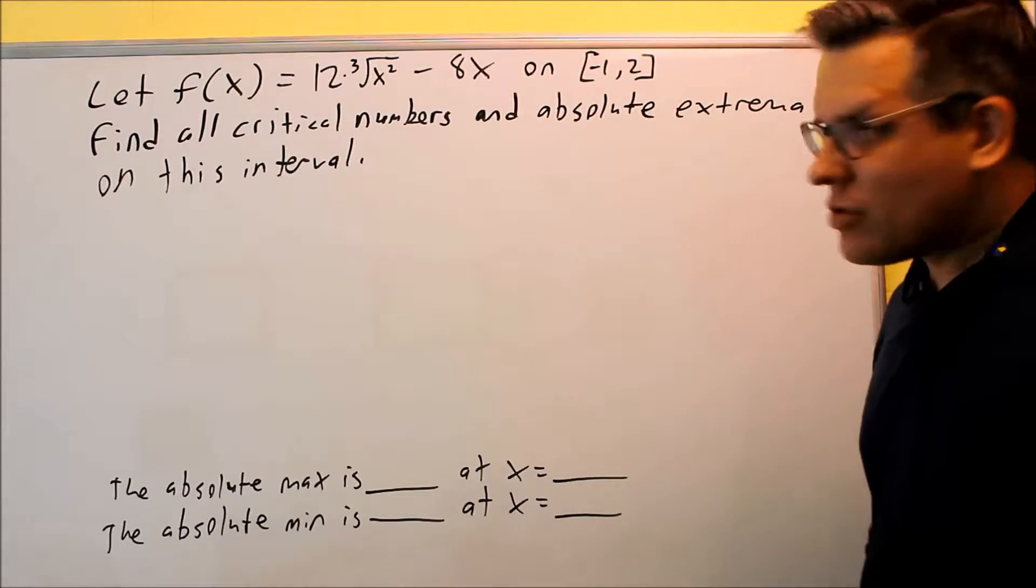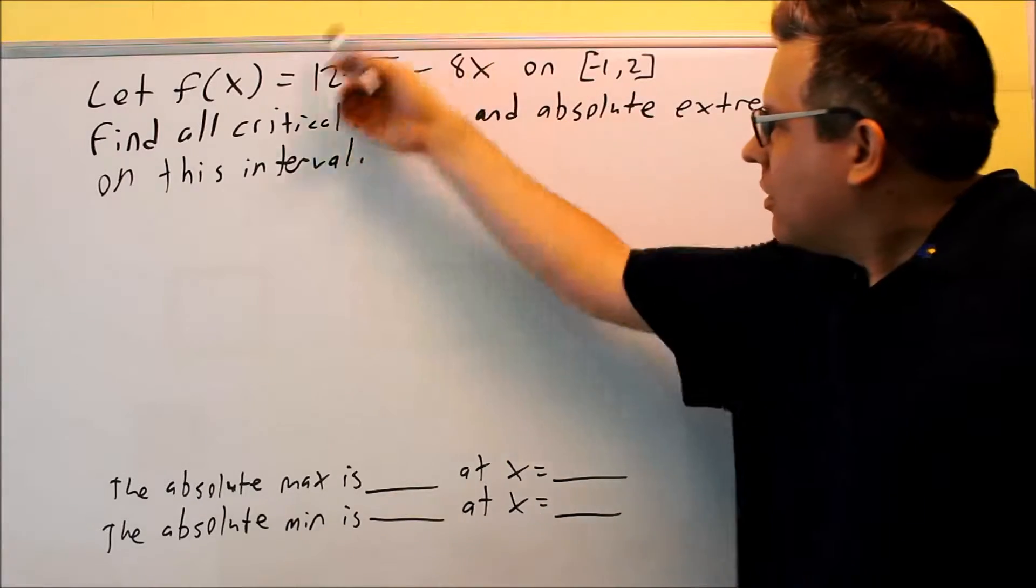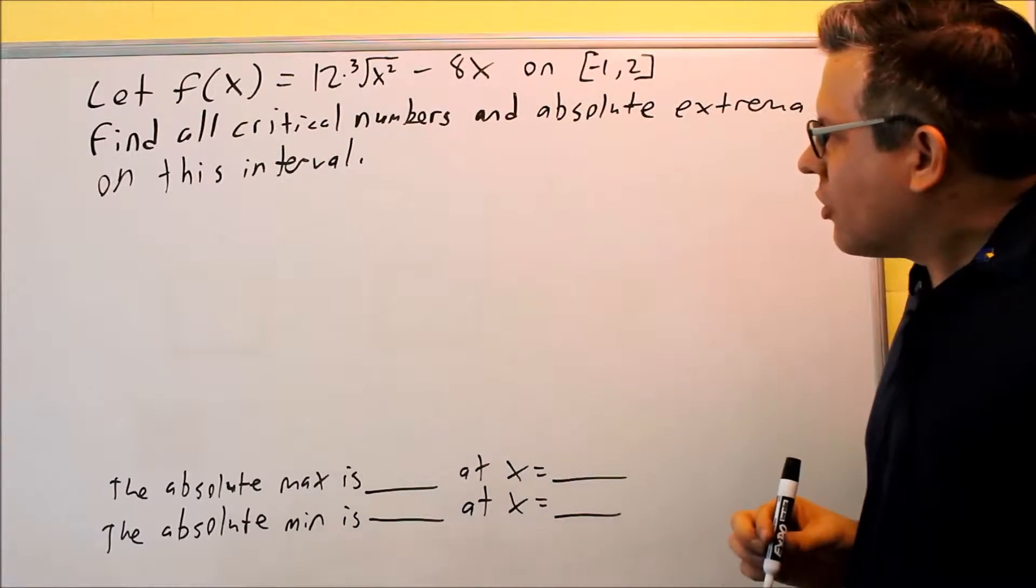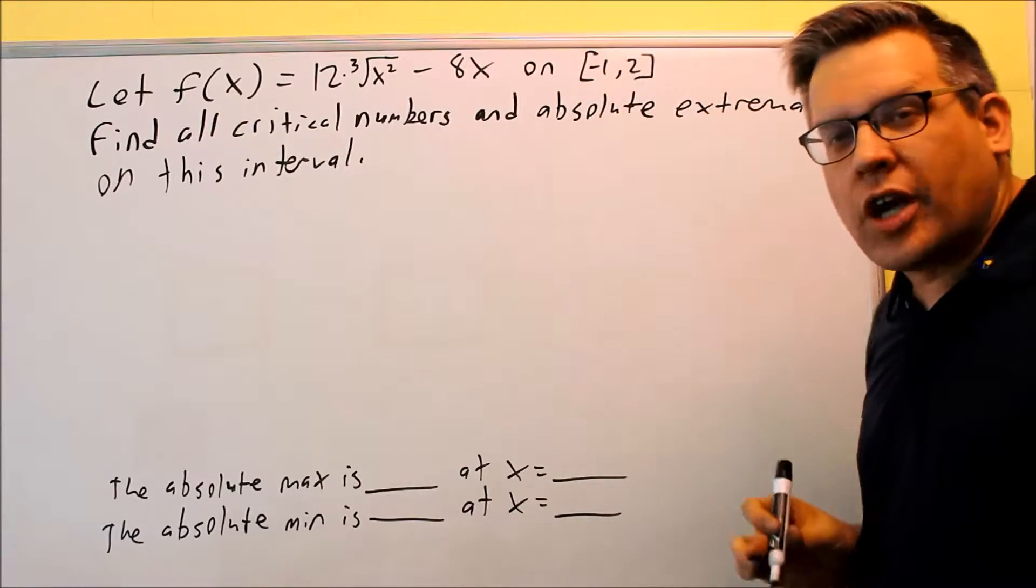Okay, so this problem is asking us to find the critical numbers and absolute extrema. Here's our function: 12 times the cube root of x squared minus 8x, and the interval is negative 1 to 2.